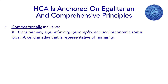What this means is that the HCA is anchored on egalitarian and comprehensive principles. To build a human cell atlas that's representative of all of humanity, we must compositionally consider how sex, age, ethnicity, geography, and socioeconomic status impact the properties of individual cells, to generate a human cell atlas that's representative of all of humanity and equally beneficial for all.